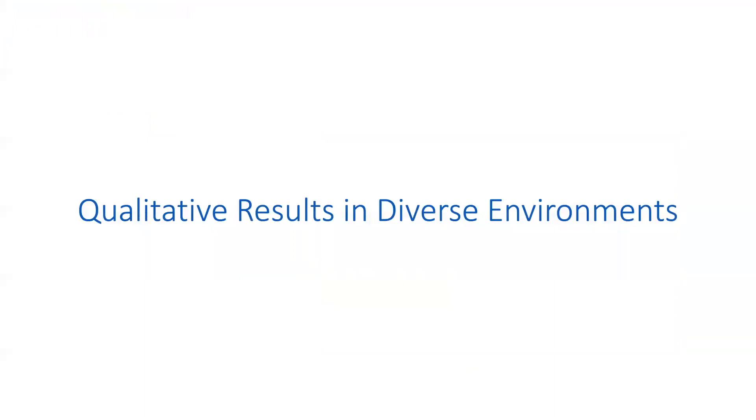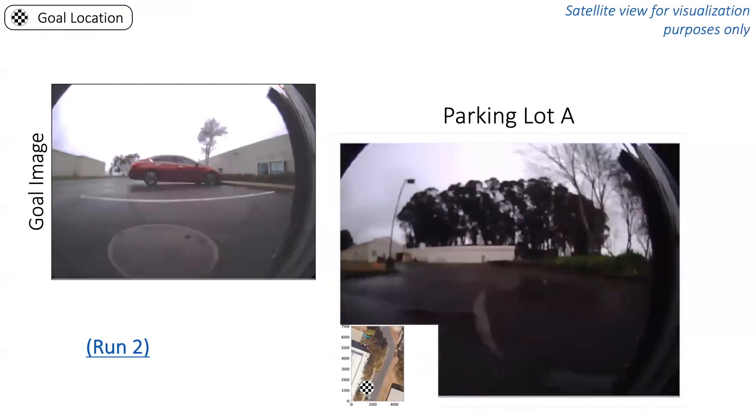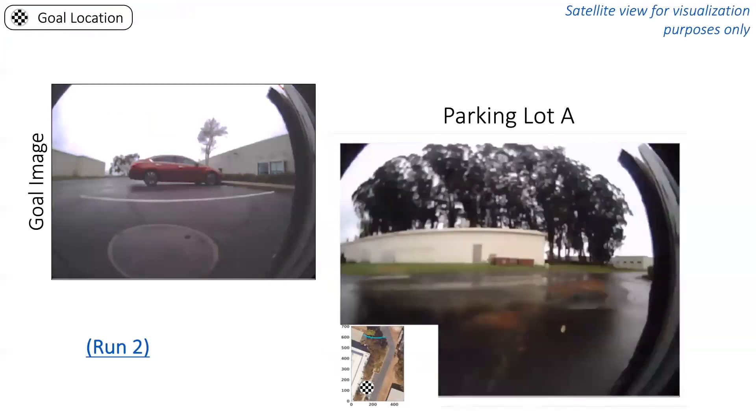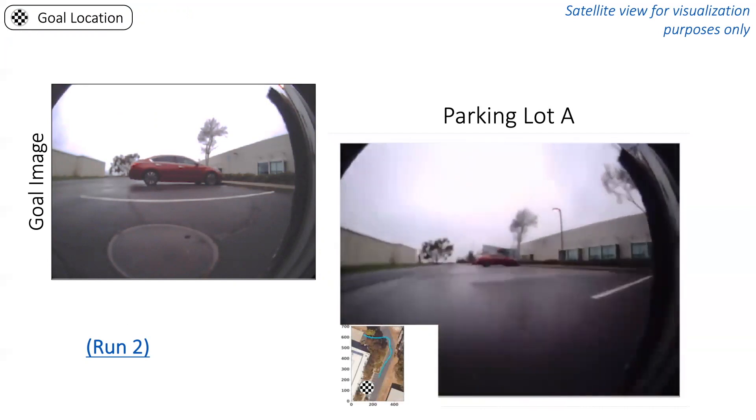We now show some qualitative results of RECON navigating to visual goals in novel environments. For this parking lot scene, the target is a red car that is entirely out of sight at the start. RECON follows the road and discovers the red car at the end of the parking lot.